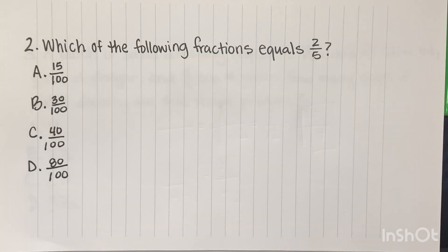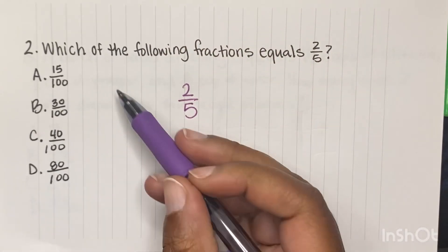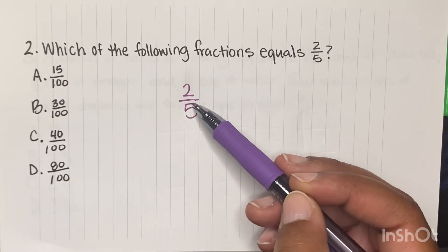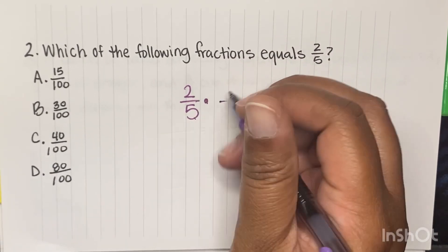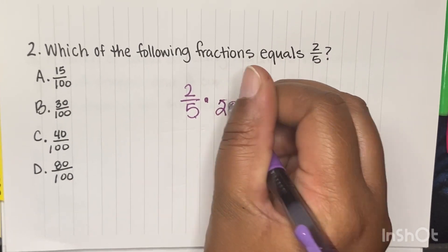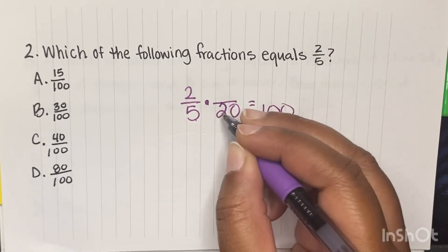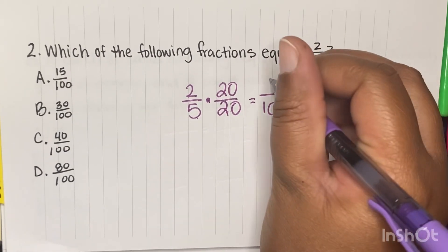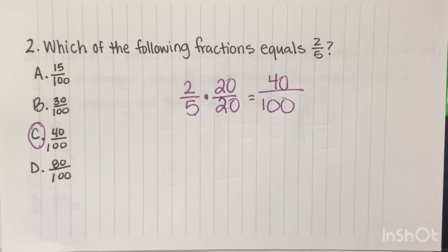Which of the following fractions equals 2 fifths? If we're looking at all our answer choices, they all have 100 at the bottom. I'm thinking: 5 times what gives me 100? 5 times 20 gives me 100. But what I do to the bottom, I must also do to the top. So 2 times 20 gives me 40. That's why C is equal to 2 fifths.